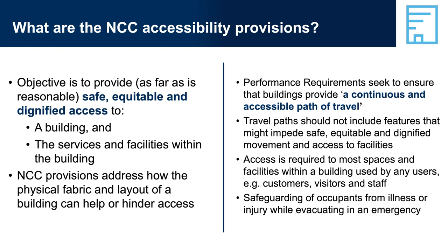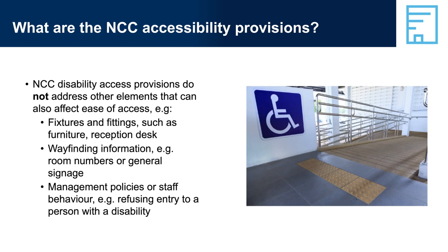The NCC is mainly concerned with the physical construction of the building. Generally speaking, what happens after construction in terms of fit-out and ongoing use and management are not covered by the NCC, but continues to be covered by discrimination law. The NCC does not address three areas: fixtures and fittings used in a building, such as furniture or reception desks; wayfinding information, such as room numbers or general information signage; and management policies or staff behaviour — for example, if staff at a nightclub refuse to allow a blind person entry.